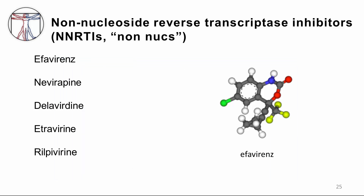These are examples of NNRTIs. Nevirapine is famous for its use in prevention of mother-to-child transmission of HIV in Africa. Others include efavirenz, nevirapine, delavirdine — which is not as commonly used — etravirine, and rilpivirine, which are some of the newer agents.